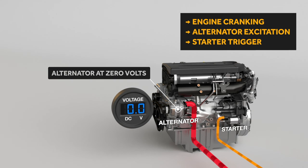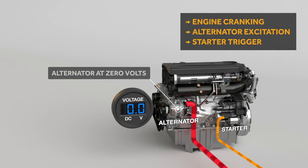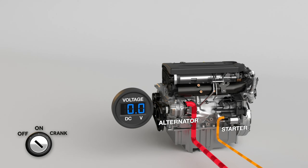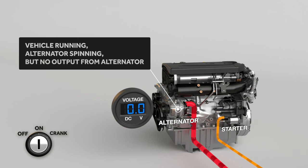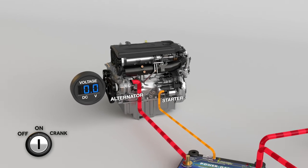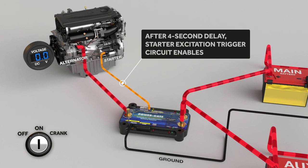To resolve this, Perfect Switch uses an alternator excitation circuit which is triggered by the starter motor. When engine cranking is complete, the alternator excitation circuit turns on.